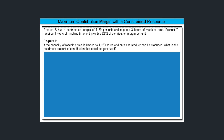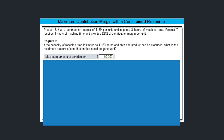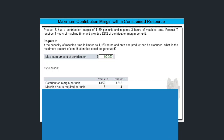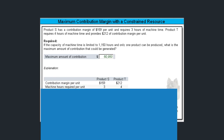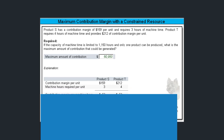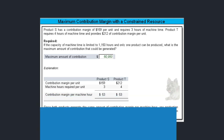Let me show you how you would answer that. The answer is $60,950, and here's how you should lay out the analysis. List the contribution margin per unit for each product, figure out the machine hours required per unit, and from there calculate the contribution margin per machine hour.